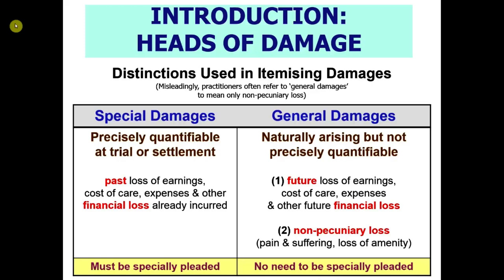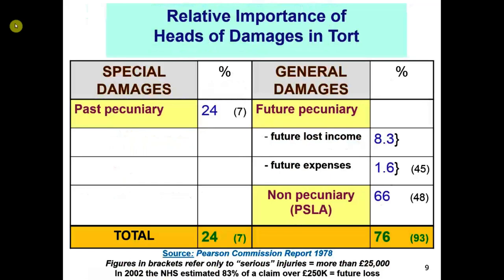The next table is in many ways so important. It's a very old table — the Pearson Commission of 1978 — but the table is basically still correct, still the right figures, give or take a few percentage points.